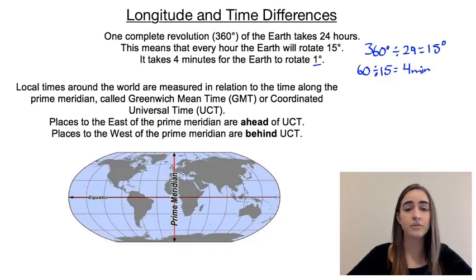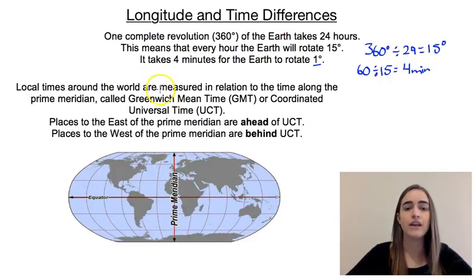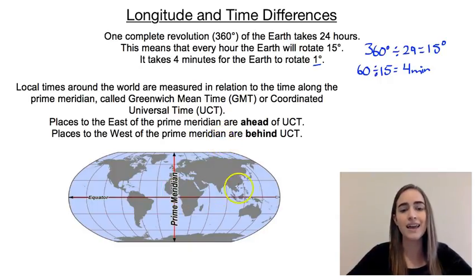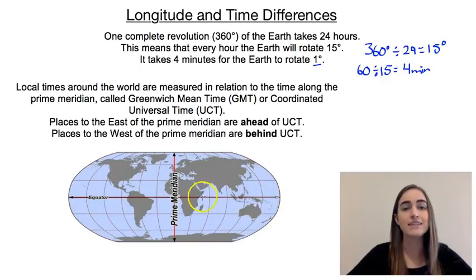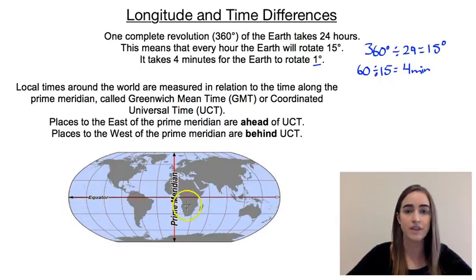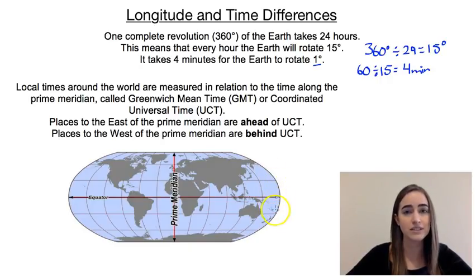Local times around the world are measured in relation to the prime meridian. The time at the prime meridian is called Greenwich Mean Time, or Coordinated Universal Time — GMT or UTC. Anywhere to the east of the prime meridian is ahead of universal time, and anywhere to the west is behind UTC. Places like New Zealand and Australia get the day early, while places like America get the day later.